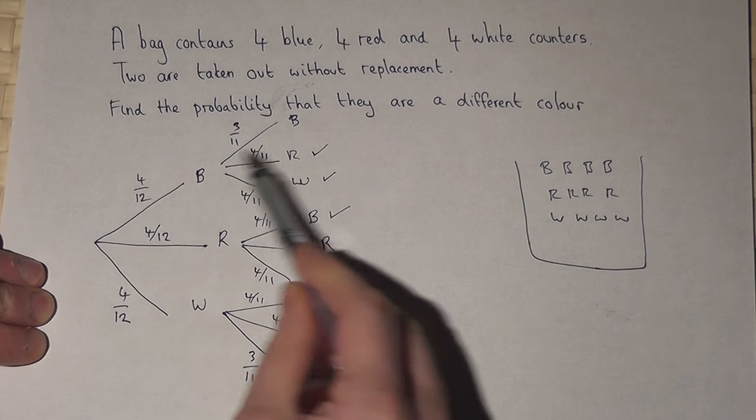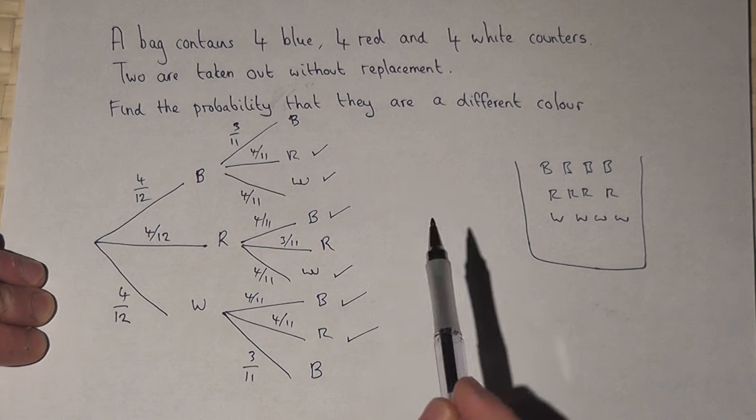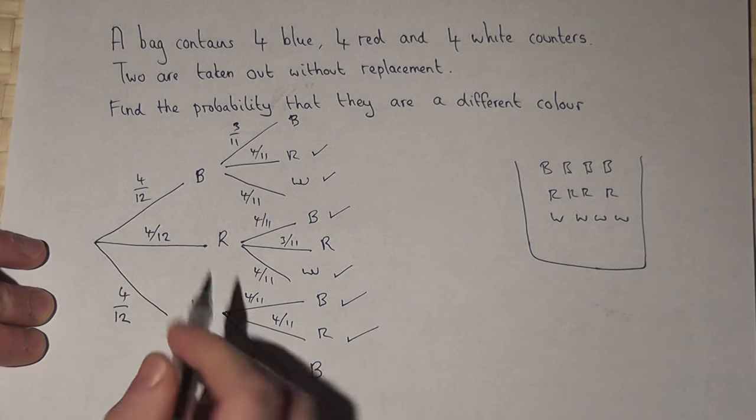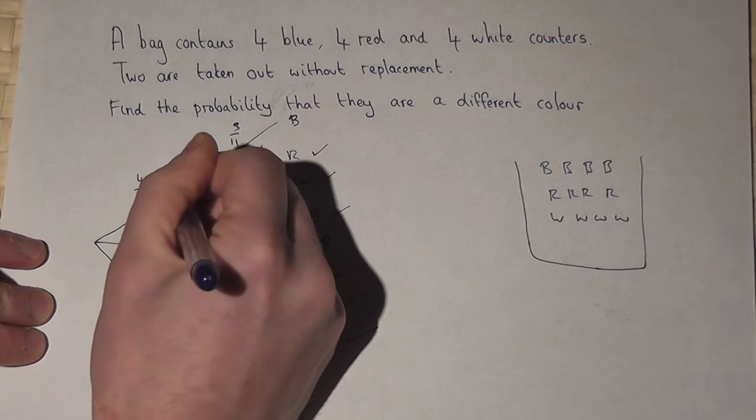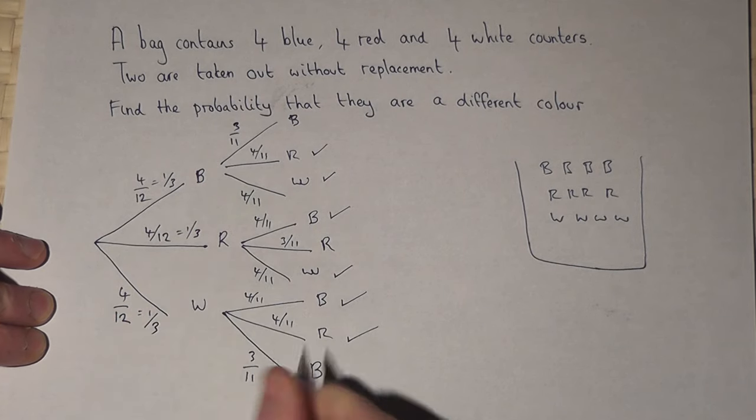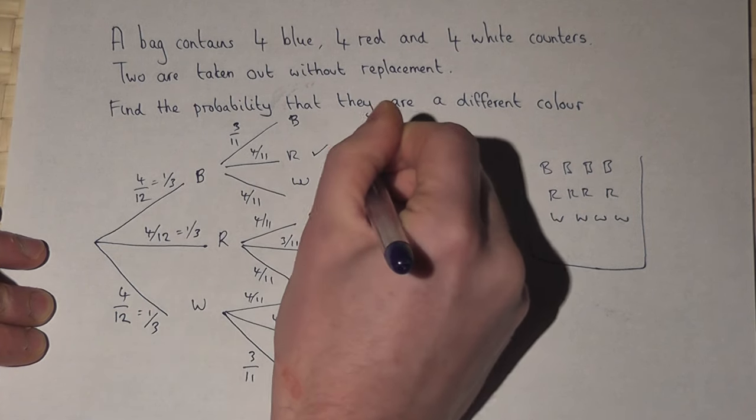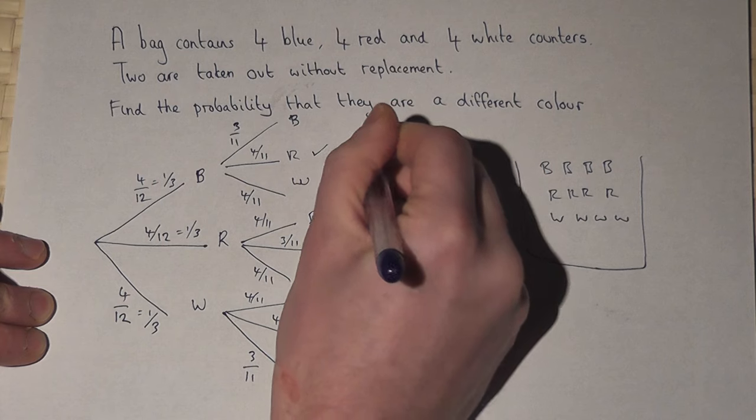Now we find the chance of each separate option occurring by timesing together the fractions. So I cancel these down now to a third. Then one third times four elevens. One times four is four, three times eleven is thirty-three.